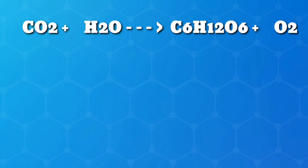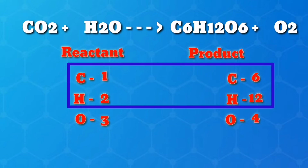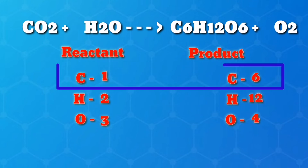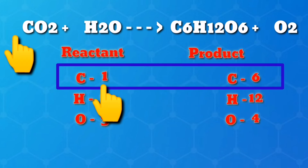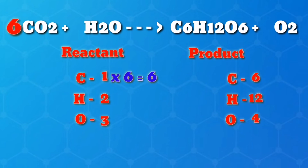Next example: carbon dioxide mixed with water produces glucose and oxygen gas. The first step is to focus on elements that only appear once on each side of the equation. Here, both carbon and hydrogen fit this requirement, so we will start with carbon. There is only one atom of carbon on the left-hand side but 6 on the right-hand side, so we add a coefficient of 6 on the carbon-containing molecule on the left.